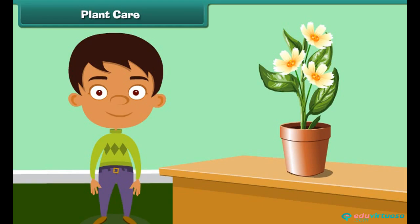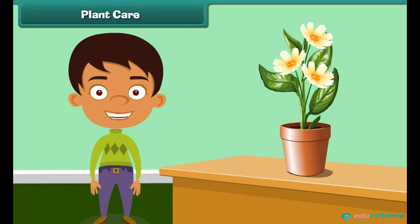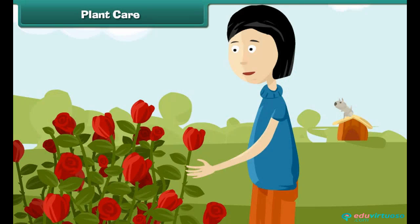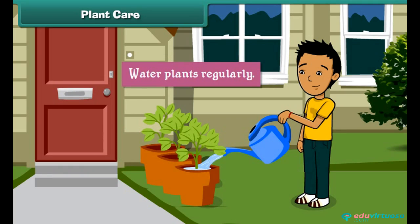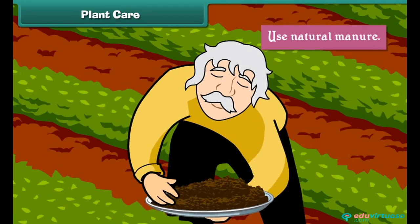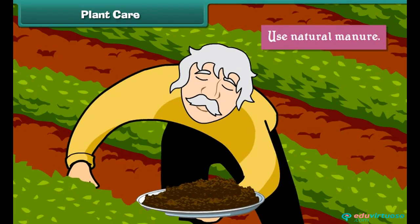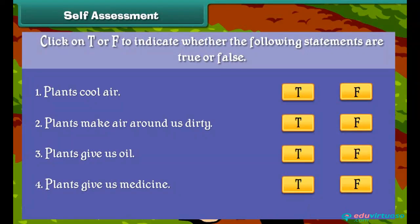Plants are useful to us in many ways. Therefore, we should take good care of them. Here are some do's and don'ts for protecting valuable plants: don't pluck flowers, water plants regularly, and use natural manure. Self-assessment: click on T or F to indicate whether the following statements are true or false.